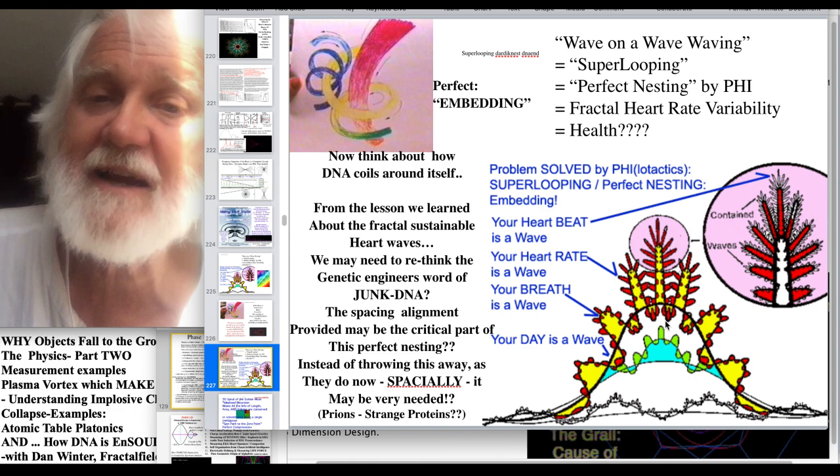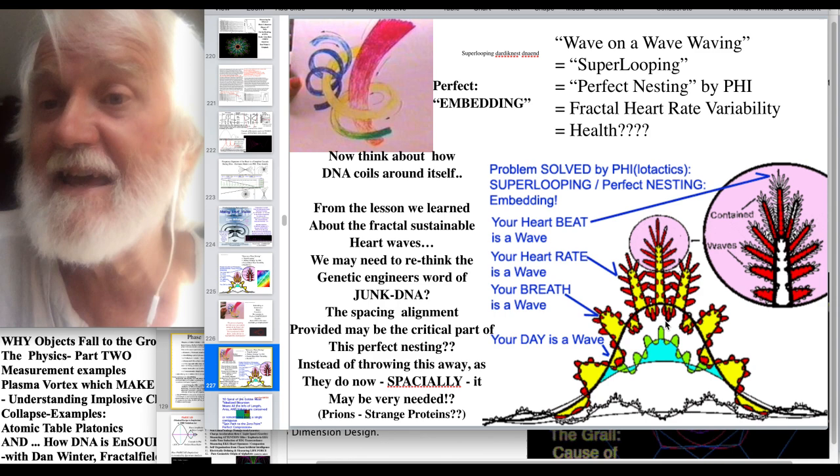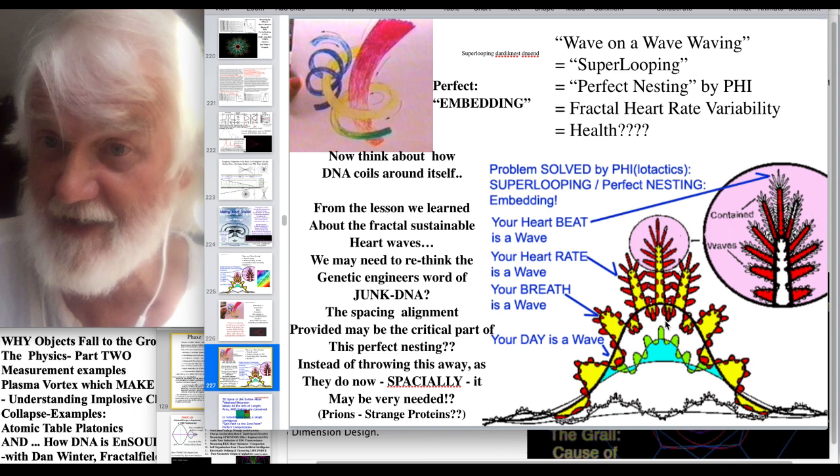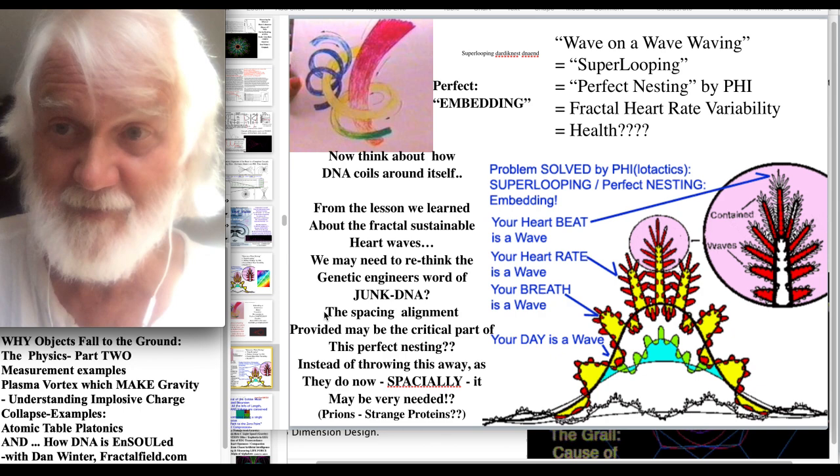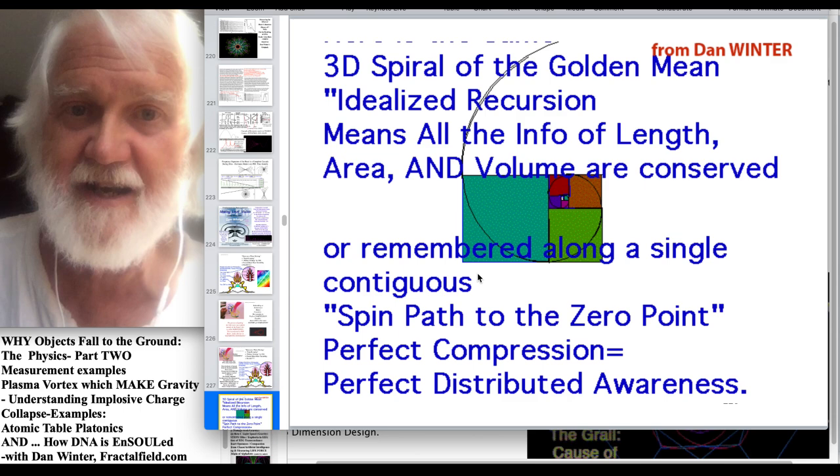And so this fractal sustainability of heart rates also explains then why the big braiding algorithms within DNA, which some geneticists have incorrectly called junk DNA, we now know that it's the spacing that determines the braid recursion phase discipline. Therefore, it's not junk DNA. No, it's a spacer necessary to make the phase discipline work for charge implosion. And that's, so stop calling a junk DNA wrong.